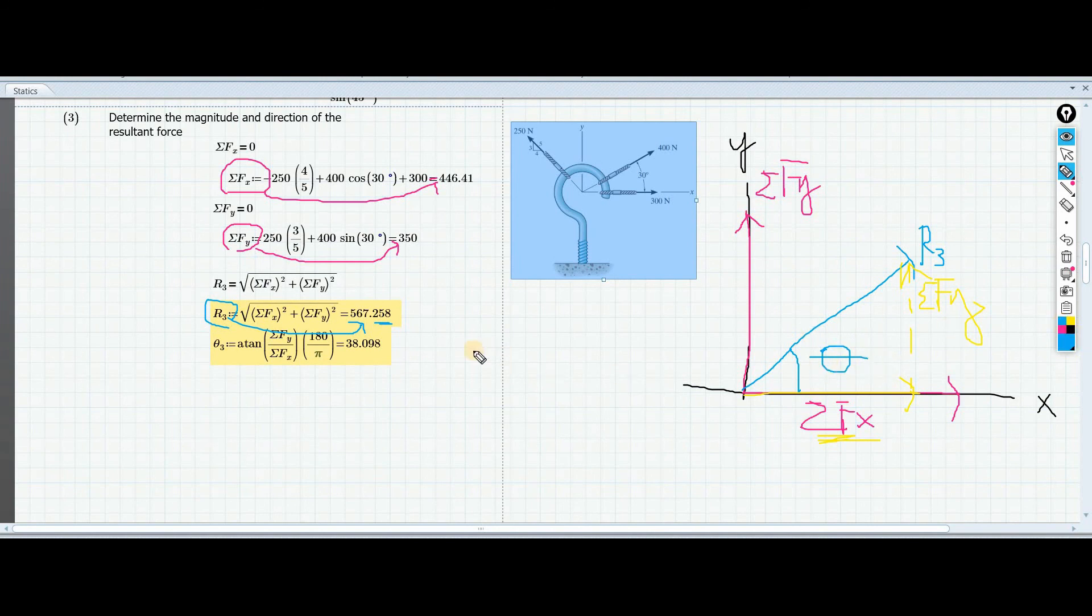In order for us to find the theta, we go back to trigonometry. Theta will be equal to - we have our summation of forces y and summation of forces x. This is opposite and this is adjacent, so we will use tangent from SOH-CAH-TOA. We will use inverse tangent of our summation of forces along y over the summation of forces along x. And that will give us 38.098 degrees. So that is the magnitude and direction of the resultant force.